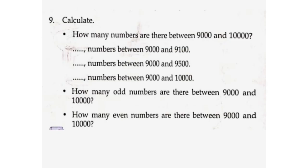Calculate: How many numbers are there between 9,000 and 10,000? Numbers between 9,000 and 9,100: 99. Numbers between 9,000 and 9,500: 499. Total between 9,000 and 10,000: 999. How many odd numbers between 9,000 and 10,000? 500. How many even numbers? 499.